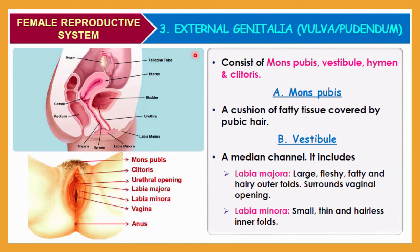External genitalia may also be called the vulva or pudendum — these two names are synonyms. It consists of mons pubis, visible in this diagram, then the vestibule region, then the hymen as discussed in the previous lecture, and finally the very sensitive structure called the clitoris, which resembles the male penis.